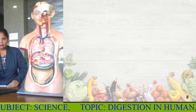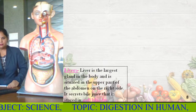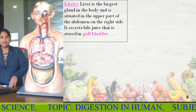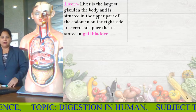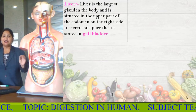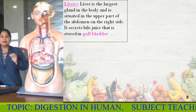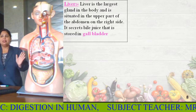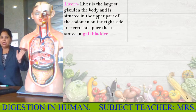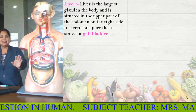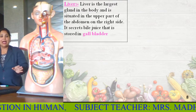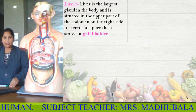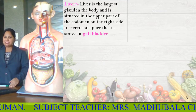We were talking about secretion from the liver. What is the role of the liver? Liver is the largest gland. There are some glands also present in our body along with the alimentary canal. So, liver is the largest gland in the body and is situated in the upper part of the abdomen on the right side.